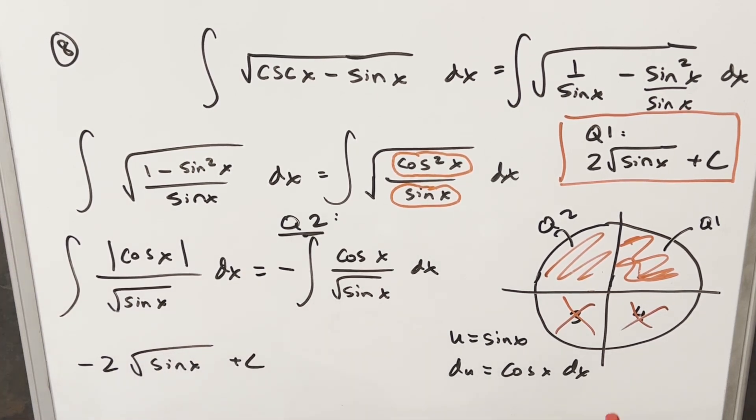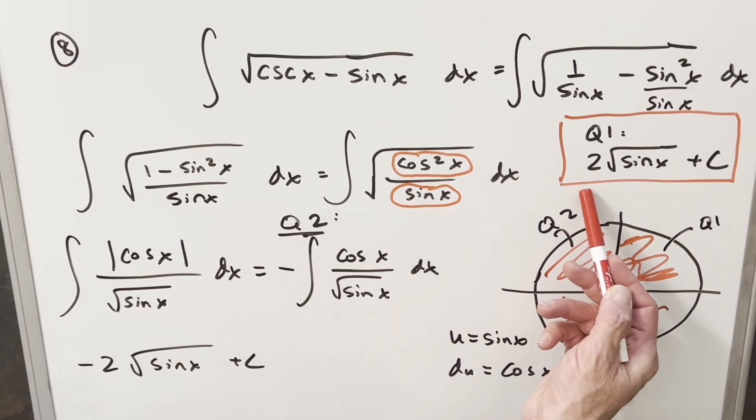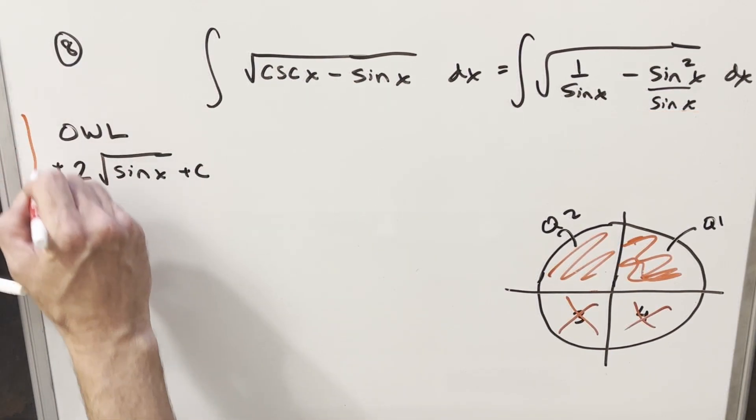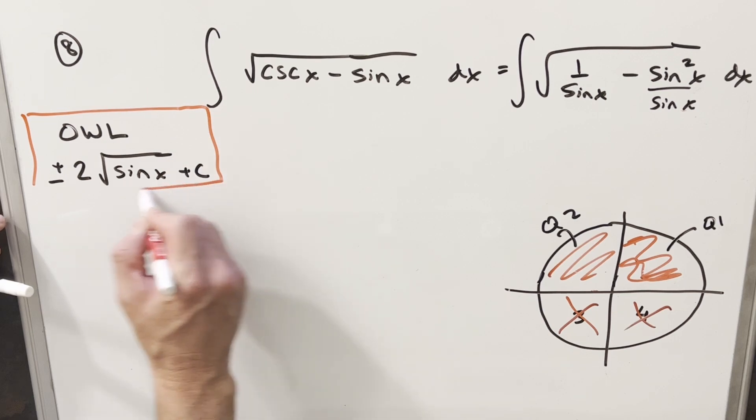So putting those two together, I actually get two different solutions. In quadrant one, I got a positive two, in quadrant two, I got minus two. So for my solution, I'm going to write this as plus or minus two square root of sine x plus c. Okay, so that's my solution. We have that here on the board right here.